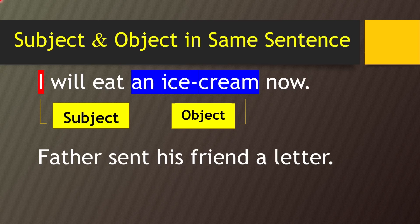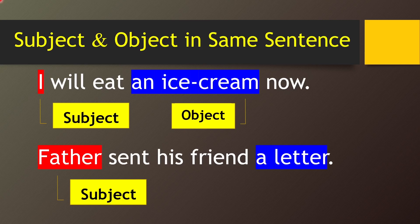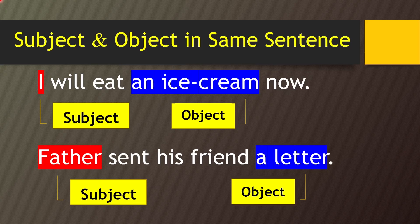Father sent his friend a letter. Here, Father is the subject because Father sent it — Father did the action. And letter is the object because letter received the action, that is sent. Sent what? A letter. So letter is the object. In this way you can find subject and object in the same sentence. But remember, it's not that all the time you will find both subject and object present — sometimes a sentence can be formed without an object also.